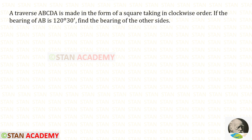Hello everyone. Today we are going to do a problem based on compass surveying. Let us read the question one time. A traverse ABCDA is made in the form of a square taking in clockwise order. If the bearing of AB is 120 degrees 30 minutes, find the bearing of the other sides.